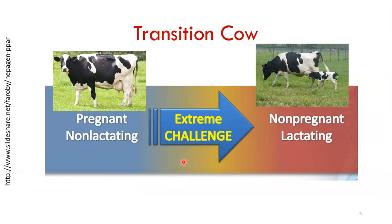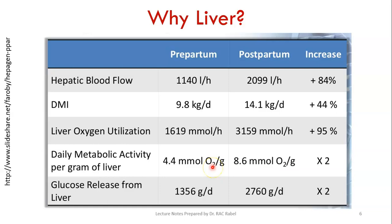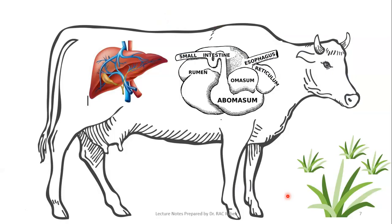The transition imposes extreme physiological challenge, particularly on the liver. Hepatic blood flow doubles per hour, dry matter intake increases by 50 percent, liver oxygen utilization almost doubles, metabolic activity per gram of liver doubles, and glucose release from the liver also doubles. The reason we focus on the liver is because it plays the major role in converting propionic acid — a volatile fatty acid — into glucose through gluconeogenesis.